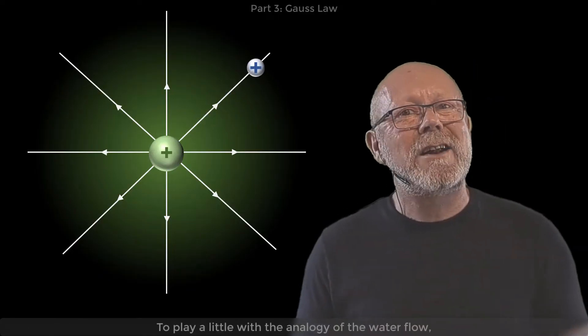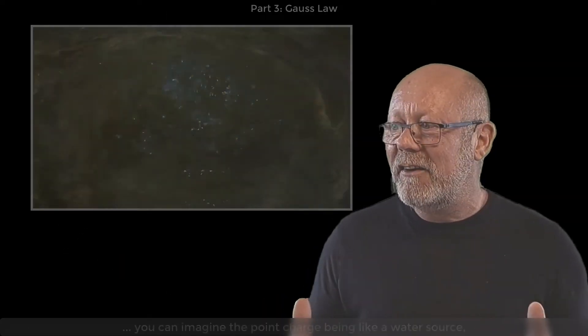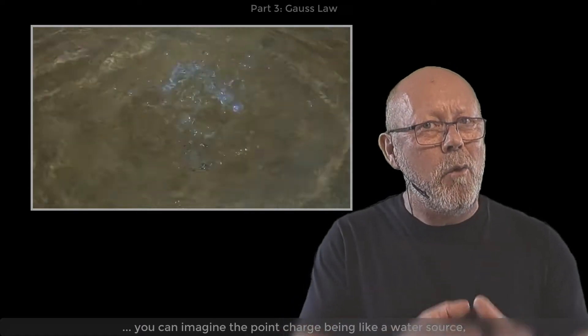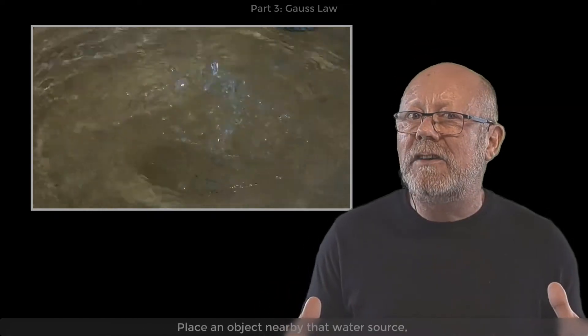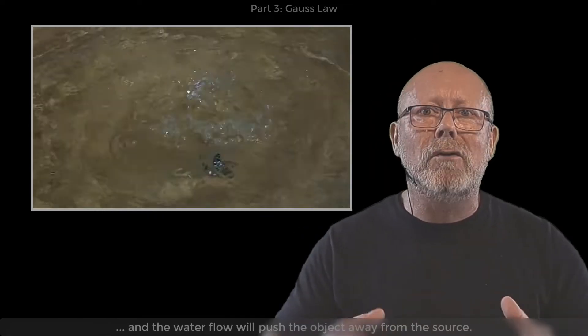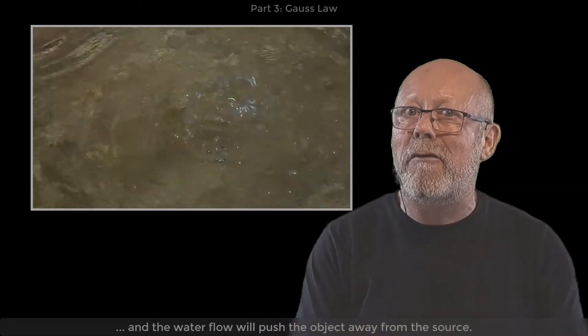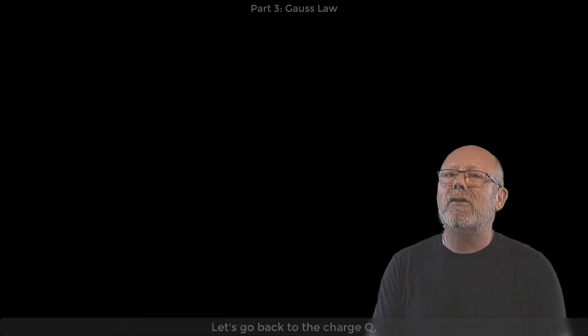The field lines represent the path that another positive charge would take if placed in the field. To play a little with the analogy of the water flow, you can imagine the point charge being like a water source from where water would be pouring in all directions. Place an object nearby that source, and the water flow will push the object away from the source.